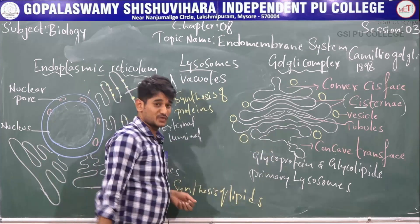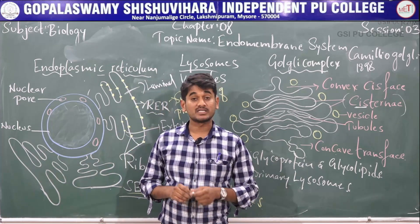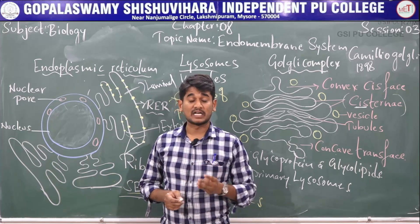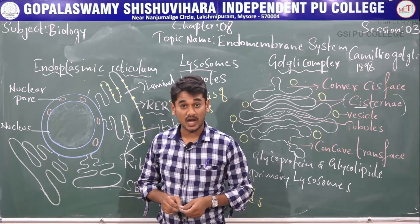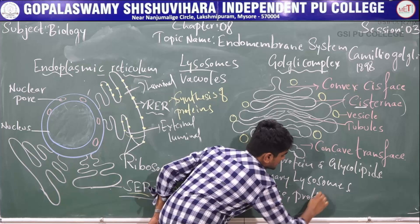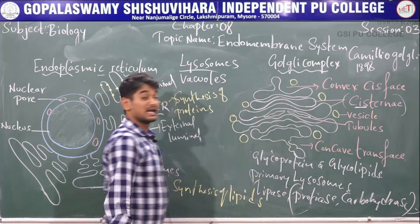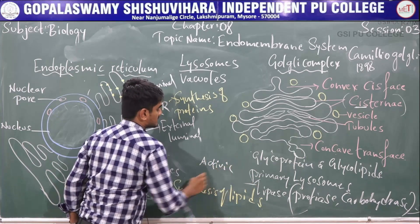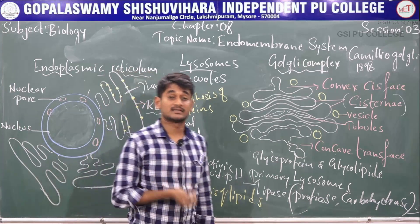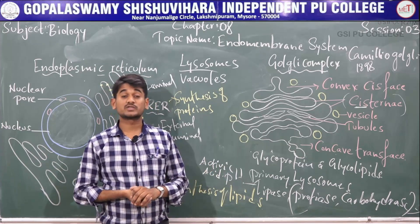The next one is lysosomes. Lysosomes are commonly called the suicide bags of the cells. They are membrane-bound vesicular structures formed by the process of packaging in the Golgi complex. Found in eukaryotic cells and sometimes spherical or irregular in shape, lysosomes store hydrolytic enzymes like lipase, protease, and carbohydrate enzymes. These enzymes are active at acidic pH and are capable of digesting proteins, lipids, carbohydrates, and nucleic acids — and sometimes even cell organelles, which is why lysosomes are called suicide bags.